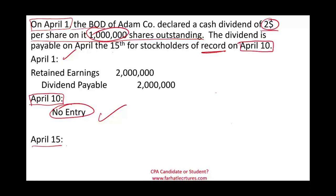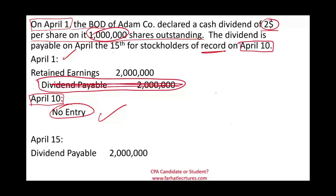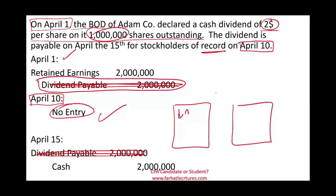The dividend is payable on the 15th. What happens on April 15th? We are going to actually send a check or transfer money to the shareholders' bank accounts. We are ready to pay this liability — the dividend payable. When we pay a liability, we debit the liability, so dividend payable is gone. And how do we pay it? We pay it in cash, so we credit cash. Looking at the overall picture: we debit retained earnings and credit cash. From a balance sheet perspective, our assets went down and our equity went down. When you pay cash dividend, assets go down and equity goes down — the company is basically shrinking because we are giving cash to the shareholders and it's leaving the company.